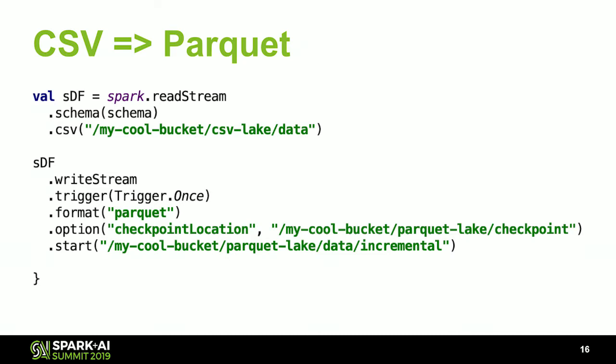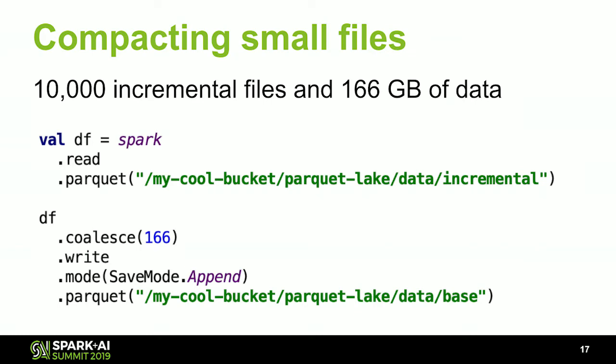Let's say this job is running for a while, and after some time we have 10,000 files in that incremental directory and 166 gigs of data. That's not ideal — if we have 166 gigs of data, we'd prefer to have 166 files. To rectify this, we can read all the files from the incremental directory into a data frame, coalesce it into 166 memory partitions, and then write that out into the base directory. Immediately after doing that write, we'll have the data duplicated in incremental and base, so we delete everything in incremental after running this compaction, getting our data lake into the ideal state where every file is one gigabyte.